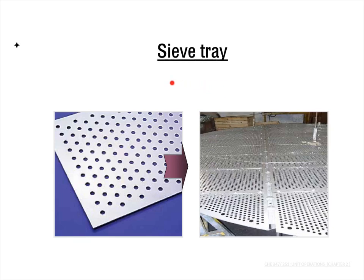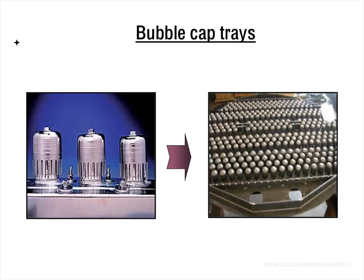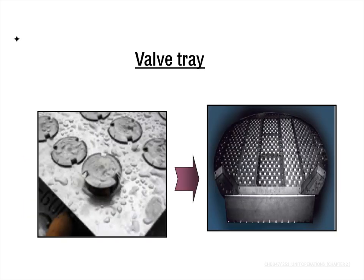This is how the sieve tray looks like. You can see there are many small holes to allow the vapor to go through perpendicular to the tray, and most of the liquid flows parallel to the tray. This is a bubble cap tray, and this is the valve tray.